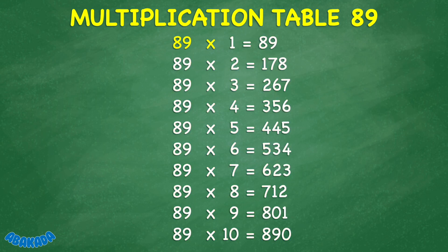89 times 1 equals 89. 89 times 2 equals 178. 89 times 3 equals 267. 89 times 4 equals 356. 89 times 5 equals 445. 89 times 6 equals 534.